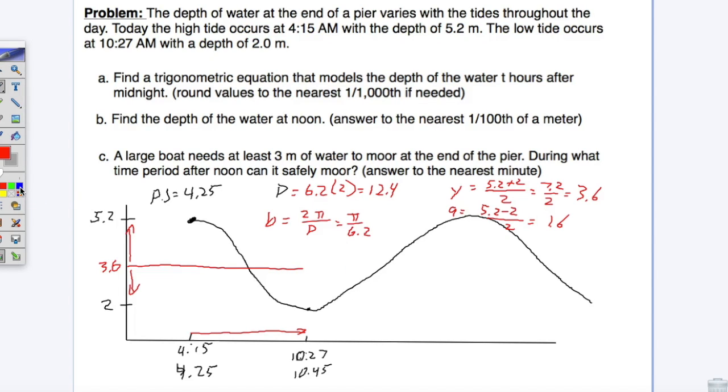Then, phase shift equals negative C over the absolute value of B. So phase shift 4.25 equals negative C over B, and B is π over 6.2. So C is going to equal 4.25 times π divided by 6.2.